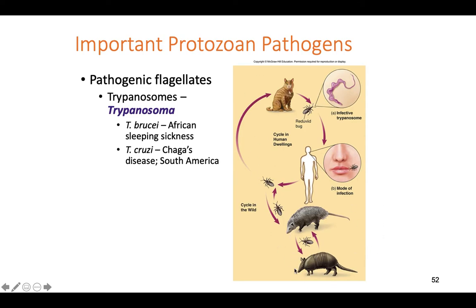Chagas disease spreads the same way, but instead of a tsetse fly it's spread by the bite of a reduviid bug, often called an assassin beetle. These bugs take blood meals from cats, armadillos, and other warm-blooded mammals that can carry Trypanosoma cruzi in their bloodstream. They then enter homes, bite your cat or you — sometimes coming up near your mouth and drinking saliva — and that's how the pathogen enters your bloodstream. Chagas disease eventually causes death by hardening the heart: the pathogen enters the heart muscle, destroys the muscle, causes it to lose functionality, and eventually causes a fatal heart attack.